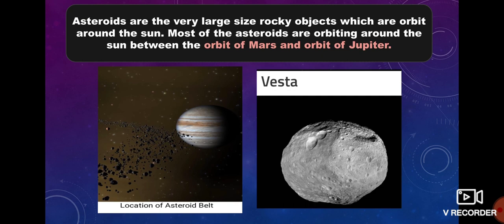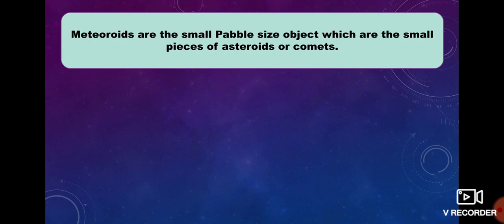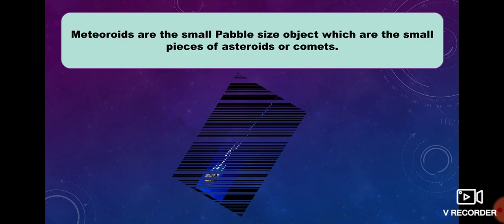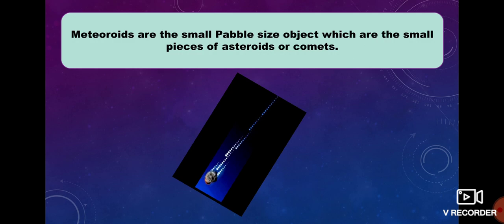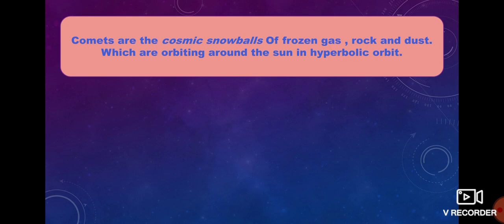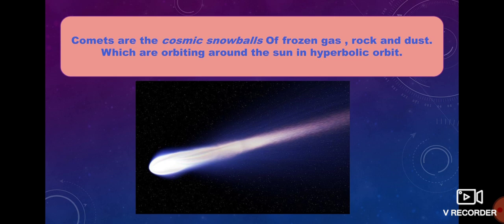Here is an image of the most famous asteroid Vesta. Meteoroids are small, pebble-sized objects which are small pieces of asteroids or comets. They are also known as fireballs because when they enter Earth's atmosphere, due to friction they get burned and become shiny. If we see them in the night sky they look like shooting stars. Comets are cosmic snowballs of frozen gas, rock, and dust which orbit the Sun in hyperbolic orbits.